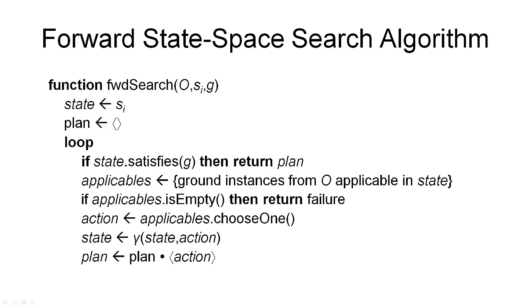Here is the forward state space search algorithm. This algorithm is defined as a function forward search that takes three arguments, namely the three components that make up a planning problem. The first component is the set of operators defined for the planning problem. Then we have an initial state and a goal description.